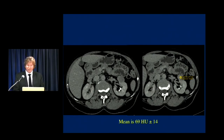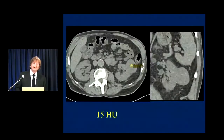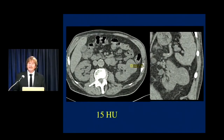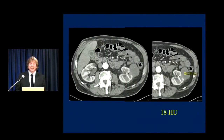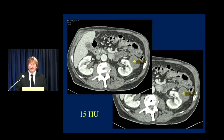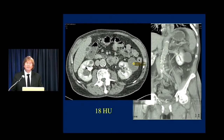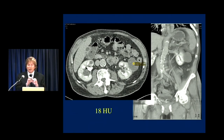Another example: a lesion looks solid but measures 15 Hounsfield units — under 20 is most likely benign, but it doesn't look like a simple cyst. On arterial phase it measures 18, on venous phase 15, on excretory phase 18. This lesion did not enhance — it stayed the same within two or three Hounsfield units, classic for a high-density renal cyst. If you only visually look at the lesion, you're thinking tumor. So it's very important to measure tumors. One of the mistakes is assuming something is benign when it's malignant, or vice versa. Using a cursor about 1 cm in size works very nicely.